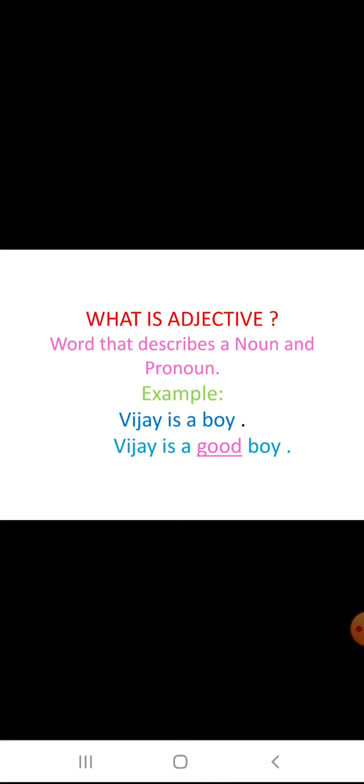First let me explain what is an adjective. An adjective is a word that describes a noun and a pronoun. For example, Vijay is a boy. In this sentence they are mentioning whether Vijay is a boy or girl. There is no adjective in this sentence.